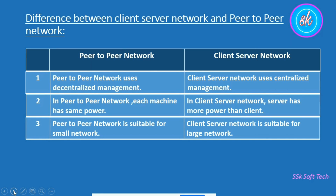The third point is that a peer-to-peer network is suitable for a small network because it is generally limited to 10 to 15 computers only. But a client-server network is suitable for a large network because there is no limitation on the number of computers in a client-server network.